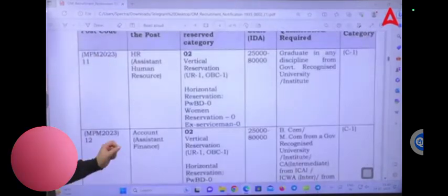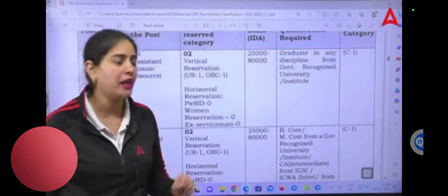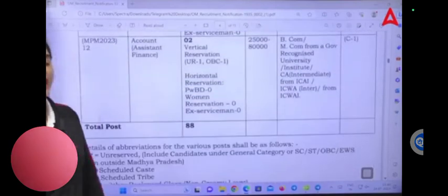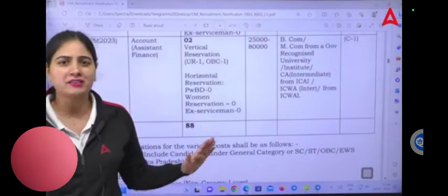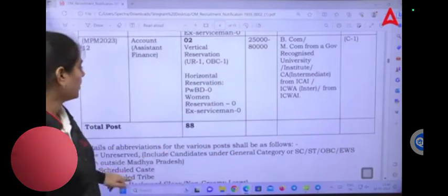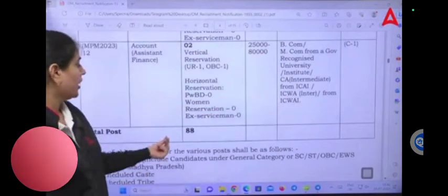The next post is HR with salary 25,000. Here only graduate, so if you are graduate with BCom, BSc, BA, then you can apply for this HR post. C1 medical will also apply. Account Assistant Finance with salary 25,000—if you have BCom or MCom, you can apply for this form. C1 medical available here.